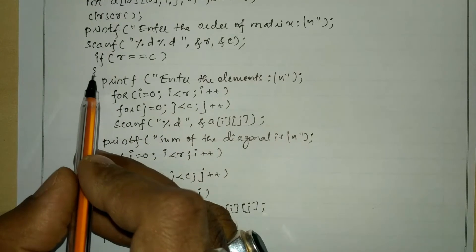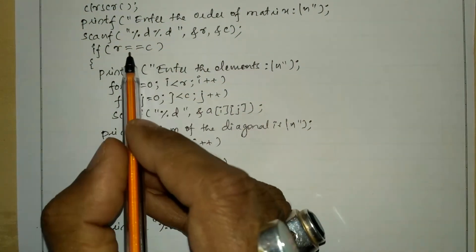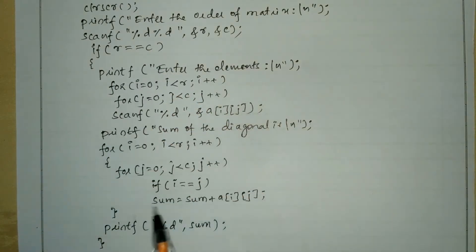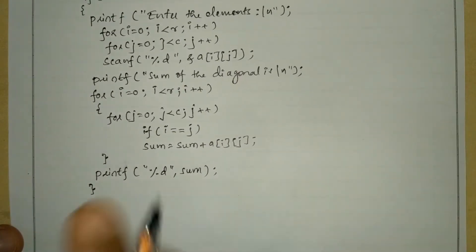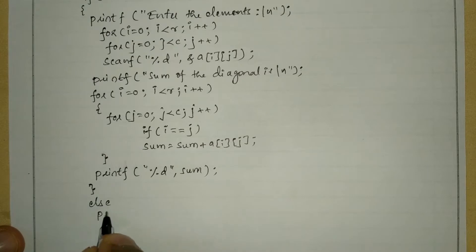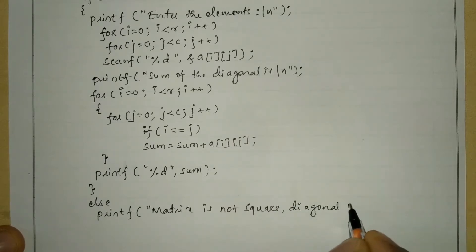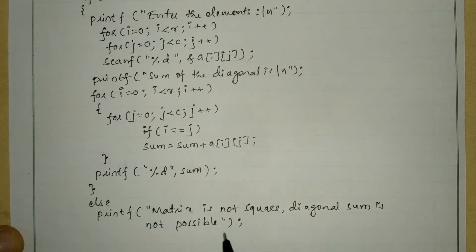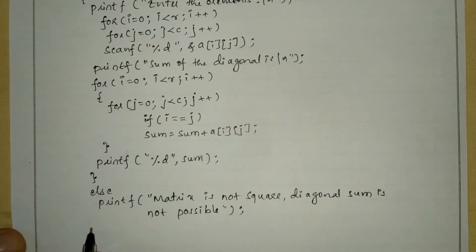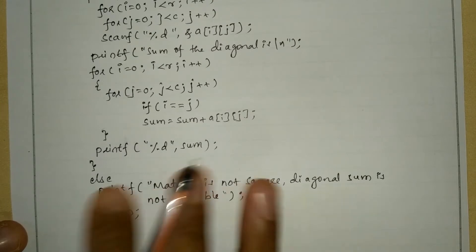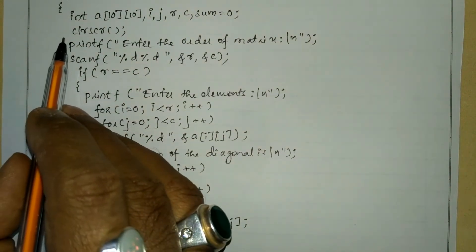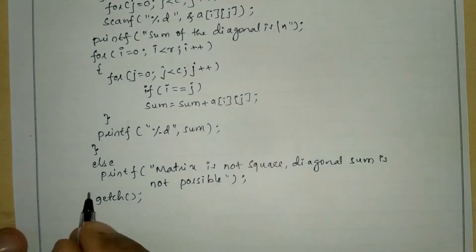If the condition is false — meaning the number of rows are not equal to number of columns — finding the sum of the diagonal is not possible. So we write the else part with a printf statement: 'Matrix is not square, diagonal sum is not possible.' The last statement is getch, and we write the closing brace for the main function.